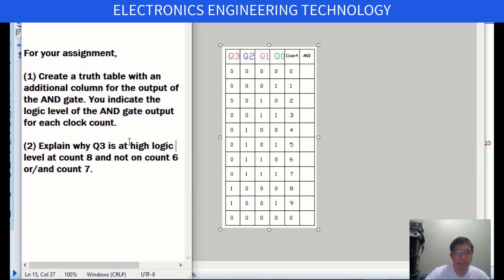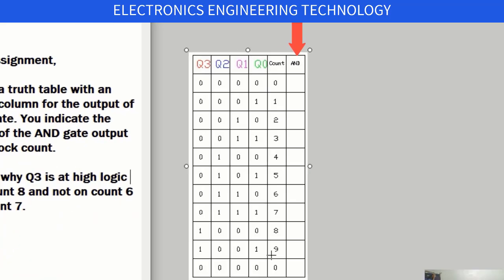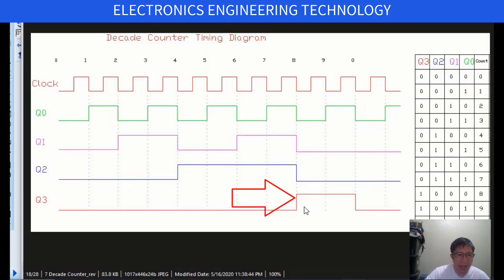Now, for your assignment, create a truth table with an additional column for the output of the AND gate, and indicate the logic level of the AND gate output for each clock count. Also explain why U3 is at logic high level at count 8 and not on count 6 or count 7.